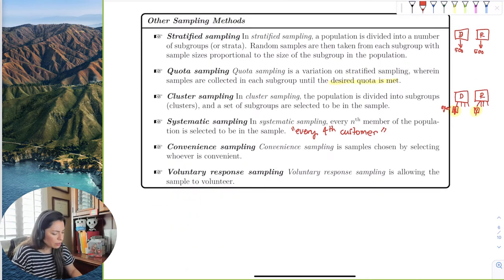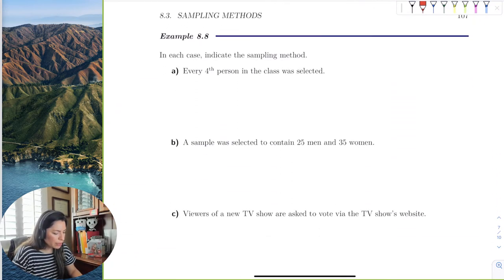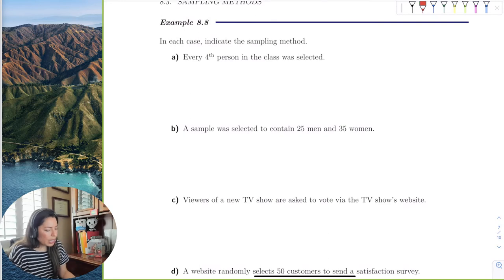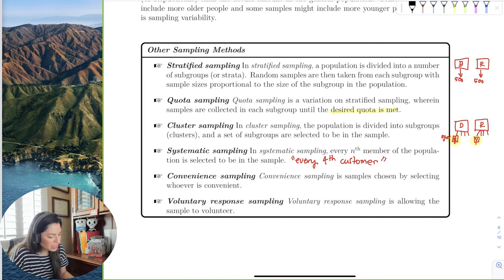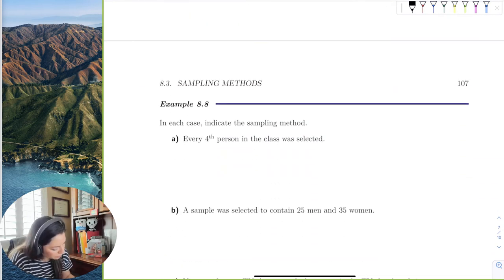Okay, so let's go ahead and take a look at a few examples. If I went ahead and surveyed every fourth person in the class, then that was, which I just did, systematic sampling. Okay, sampling.